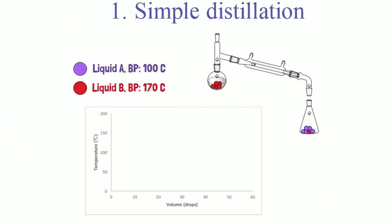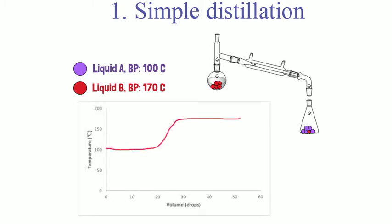Let's look at the distillation graph which plots temperature versus volume of distillate. At the beginning, the temperature slowly rises until it hits 100 degrees and it plateaus. This is when liquid A is being collected. Once liquid A is done, the temperature rises until it reaches the boiling point of the second liquid, which is 170 degrees in this example, and then it plateaus again while we're collecting it.